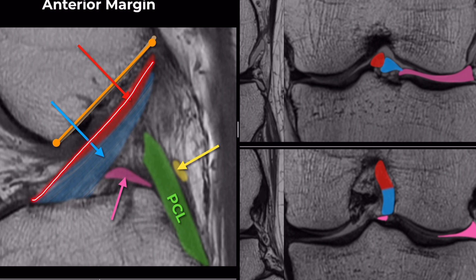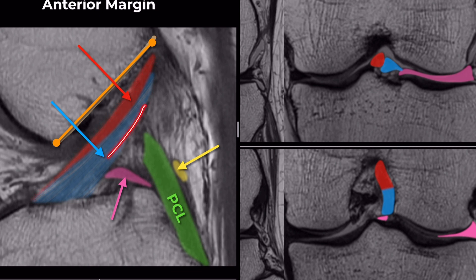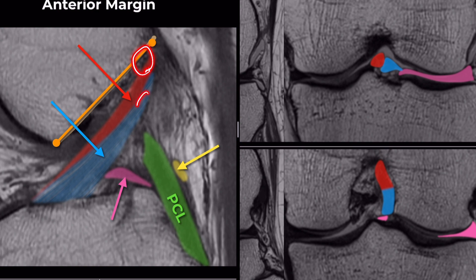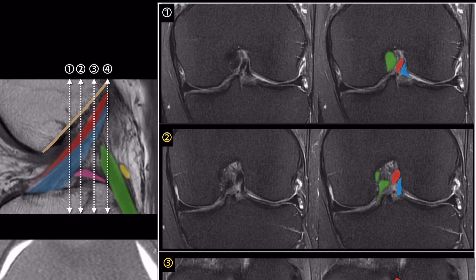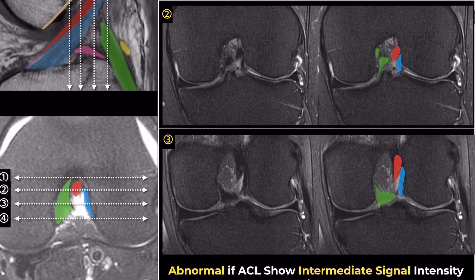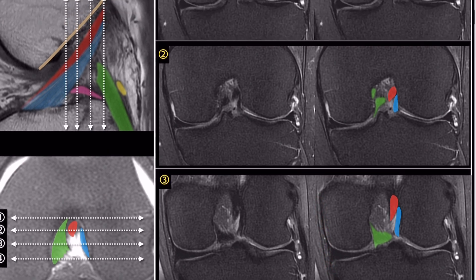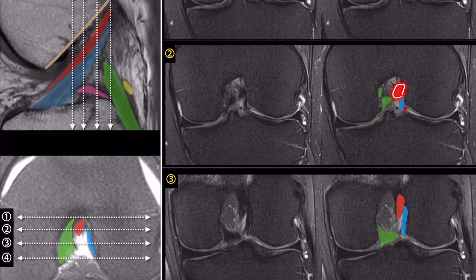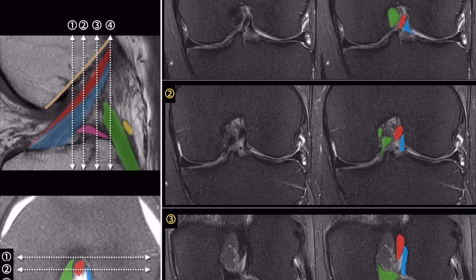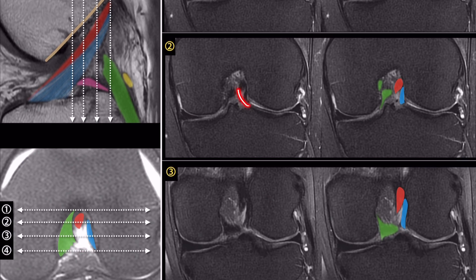The anteromedial bundle fibers originate from the anterior and proximal aspect of the femoral insertion, while the posterolateral bundle fibers originate from the posterolateral aspect. Therefore, the proximal anteromedial and distal posterolateral bundles are visible on the coronal image. Further posterior coronal images, especially at the MCL level and beyond, are important for evaluating the ACL because the proximal half of the anteromedial and the posterolateral bundle show a hypointense signal in the coronal plane.